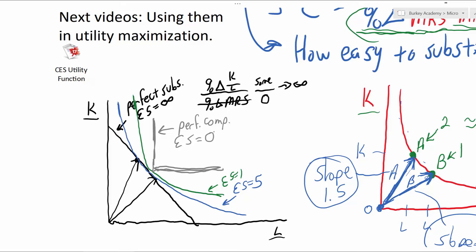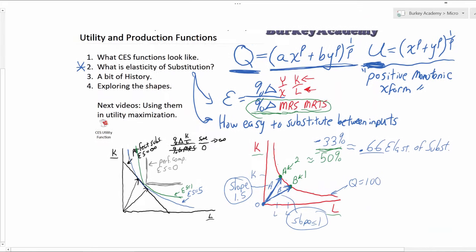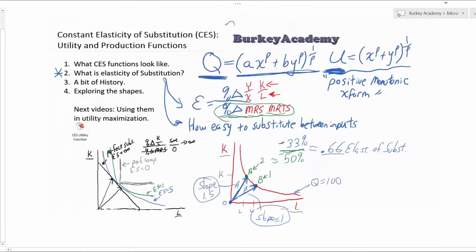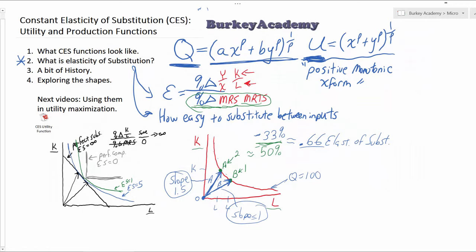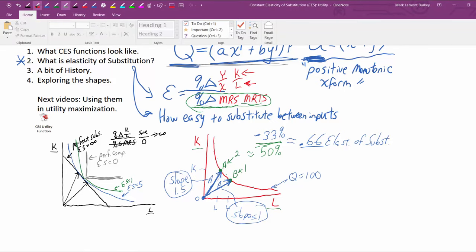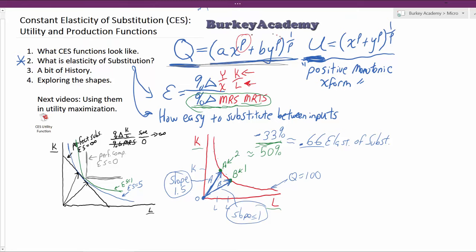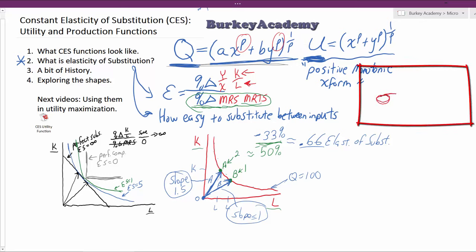Okay, I think we've got our feet pretty well grounded in what we're talking about. There's a relationship: this rho in the formula is not the elasticity of substitution itself, but it's related to it. The typical symbol we'll use for elasticity of substitution is sigma — lowercase sigma. In this formula, the way to get the elasticity of substitution from rho is: sigma equals 1 over (1 minus rho).